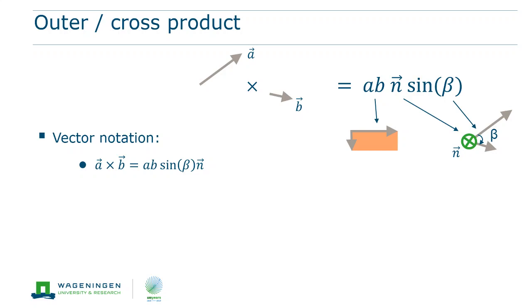The outer product is indicated by a cross, and so the alternative name is cross product. The result of the outer product of vectors a and b is the product of the length of a and b, and the sine of the angle between the two vectors.